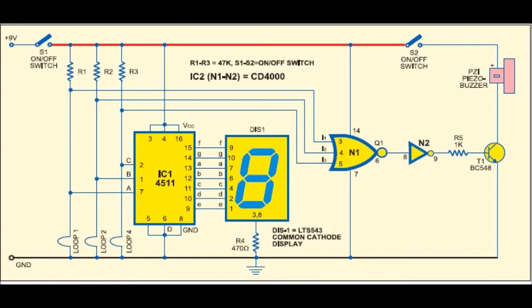For example, if loops 1 and 4 are broken, the display will show 5 (1 plus 4). When all 3 loops are intact, the display will show 0. All three inputs of NOR gate N1 remain low to give a high output.